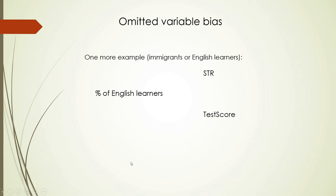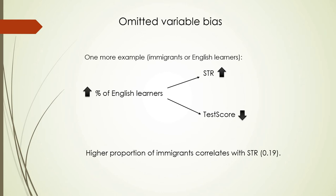There is also another example: the percentage of English learners. If some districts have more immigrants whose native language is not English, their test performance will be lower because they don't understand the questions well. But also, in those same districts with more English learners, the pressure on teachers is higher because there are more students in classes, so the student-teacher ratio goes up.